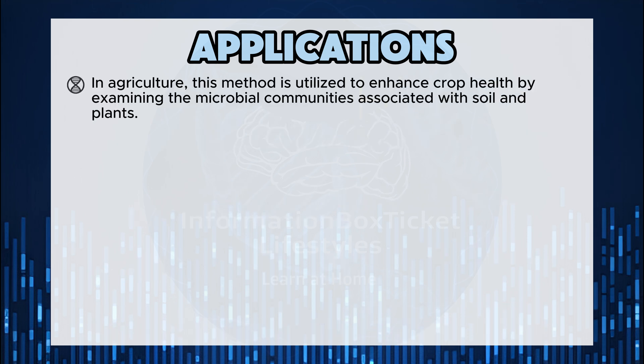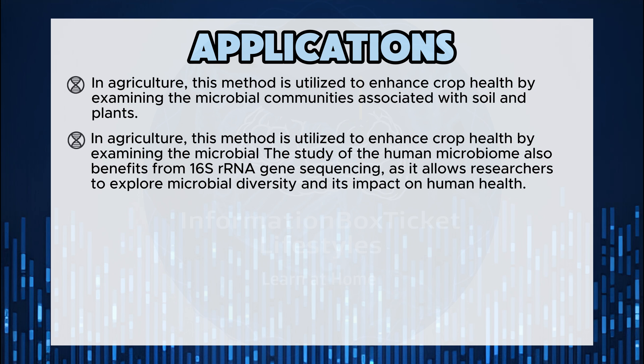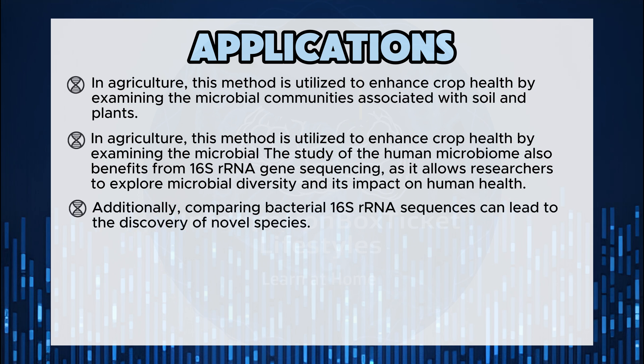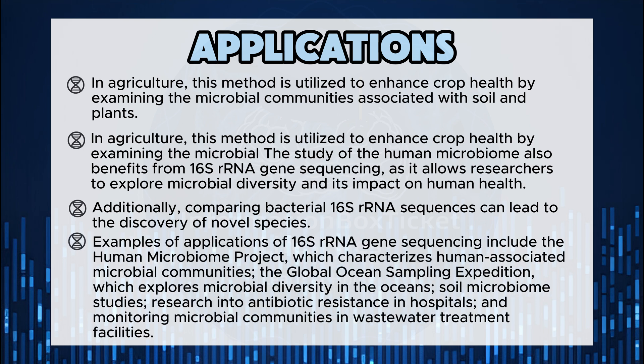In agriculture, this method is utilized to enhance crop health by examining the microbial communities associated with soil and plants. The study of the human microbiome also benefits from 16S rRNA gene sequencing, allowing researchers to explore microbial diversity and its impact on human health. Additionally, comparing bacterial 16S rRNA sequences can lead to the discovery of novel species. Notable examples of applications include the Human Microbiome Project, the Global Ocean Sampling Expedition exploring microbial diversity in the oceans, soil microbiome studies, research into antibiotic resistance in hospitals, and monitoring microbial communities in wastewater treatment facilities.